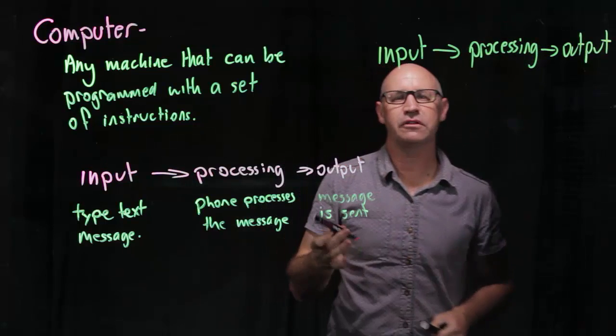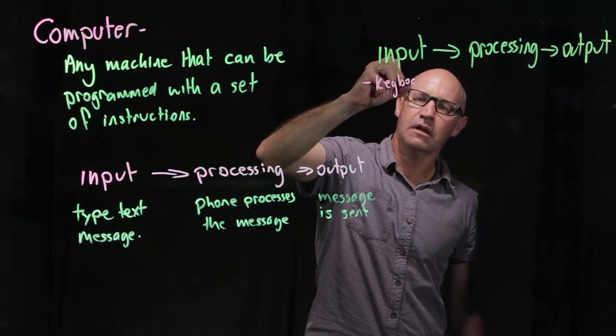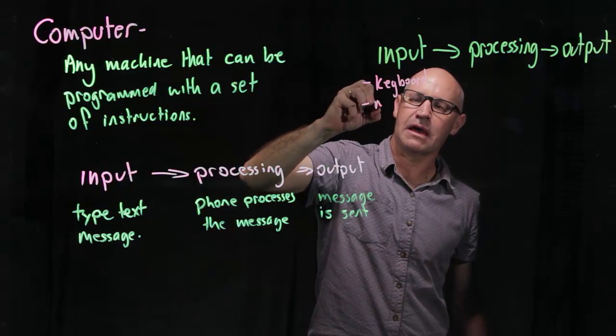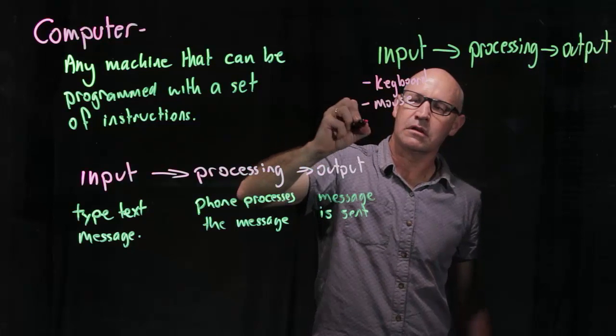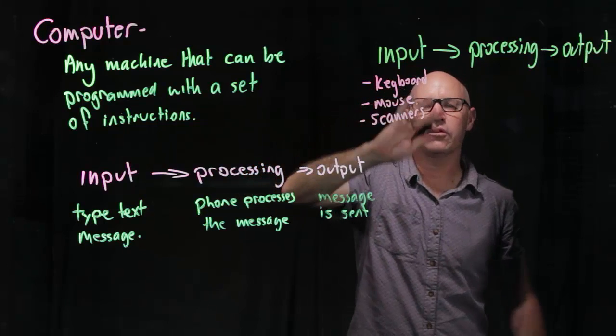So what have we got is our input devices. We've got obviously our keyboard and our mouse. But we've also got things like scanners. These are all input devices.